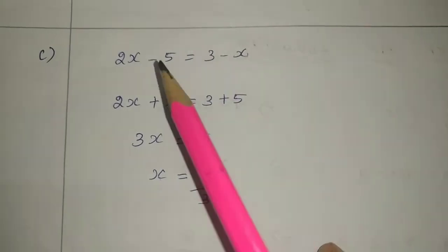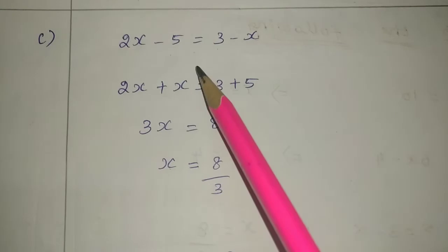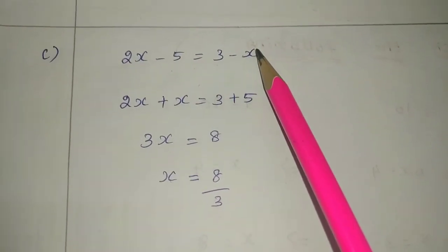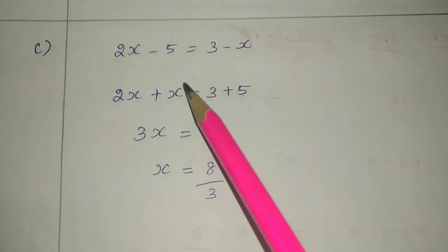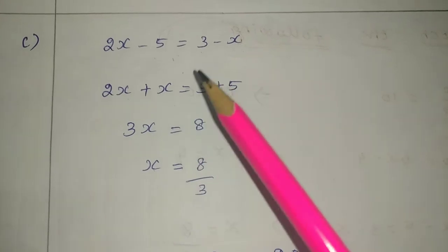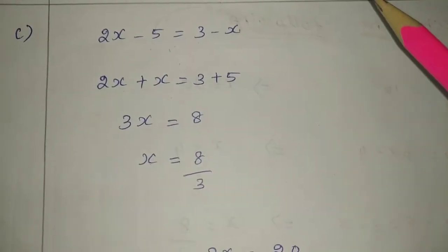Third one: 2x minus 5 equals 3 minus x. First, what do we do? Transposition. The constant term transposes, and this x value transposes. Why? Because like terms will be together - x variables with x, constants with constants. So minus x becomes plus x, and minus 5 becomes plus 5. 2 plus 1 is 3x.